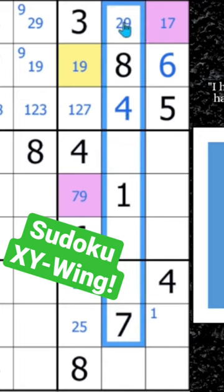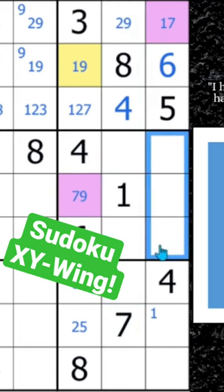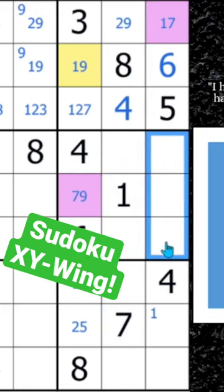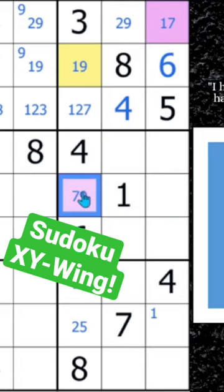Since we have a 7 coming up, column 8, none of these cells can be a 7, and then now we just eliminate all 7s from these three cells because of the XY-wing.